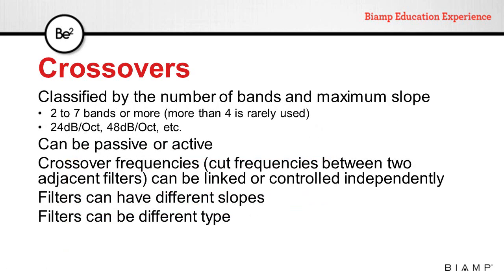Crossovers can be classified by the number of bands and maximum slope. We can find crossovers specified as 2, 3, 4, 5 or more bands, but usually more than 4 is rarely used. Or we can find crossovers specified as 24 dB per octave, 40 dB per octave, etc.